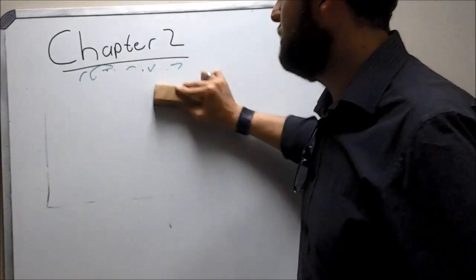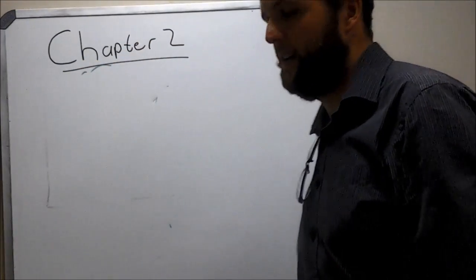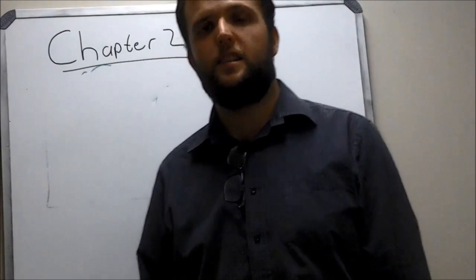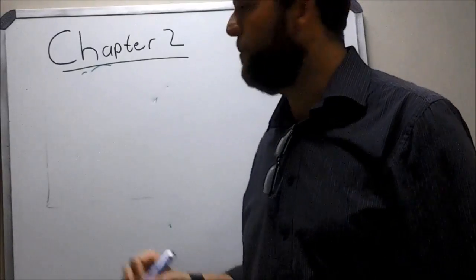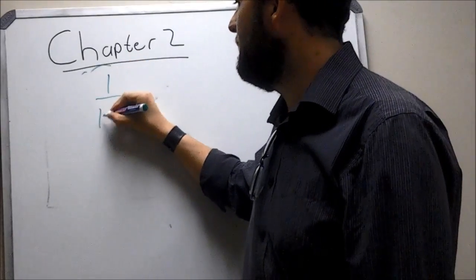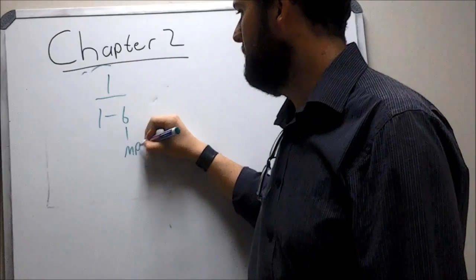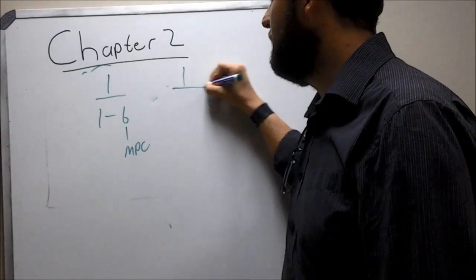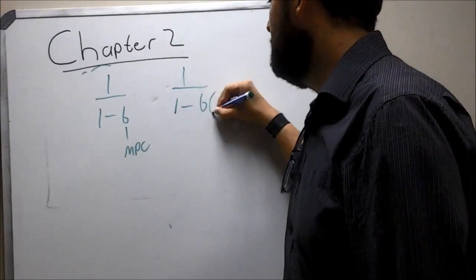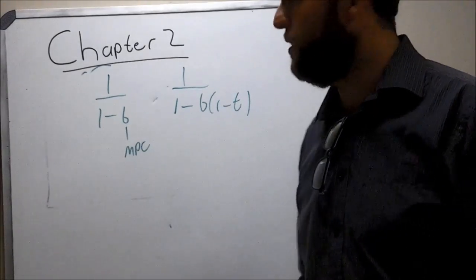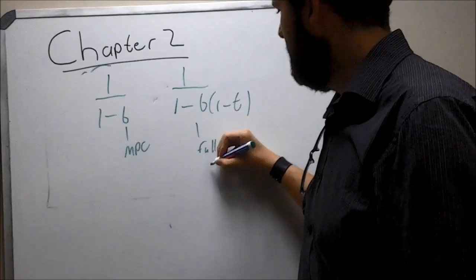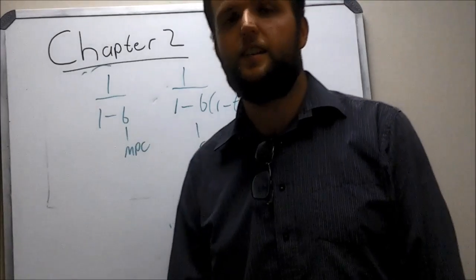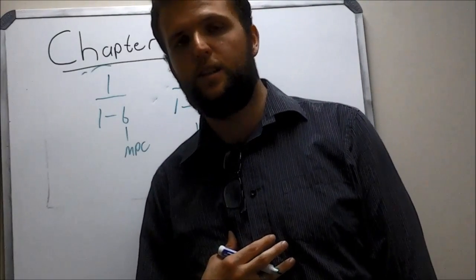The expenditure multiplier is a very important concept. For a one- or two-sector model, the formula is 1 over (1 minus b), where b is your MPC. When we add a government we get a new formula: 1 over (1 minus b(1 minus t)), where t is the tax rate. So when taxes are introduced in a question, we use this updated expenditure multiplier.